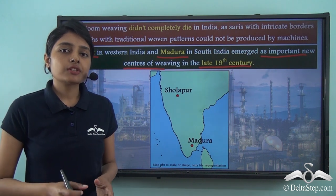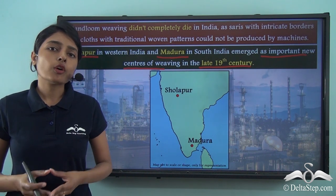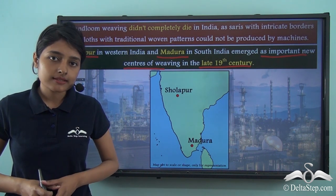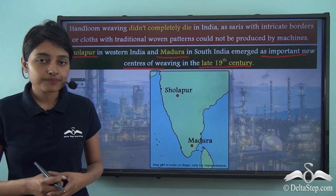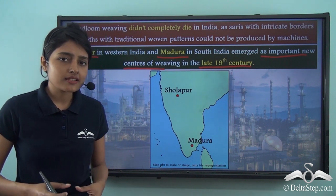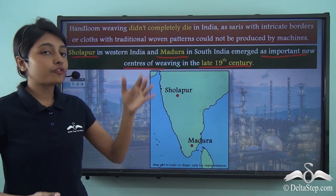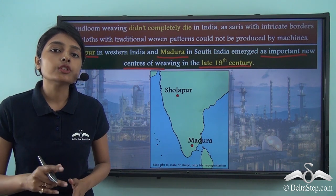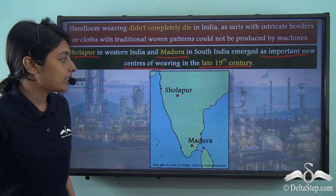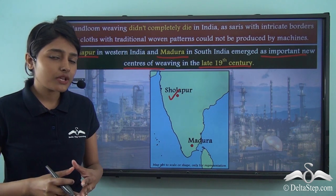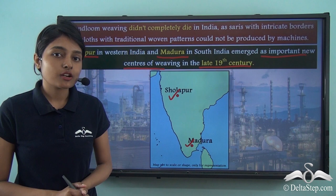By the late 19th century, Indian textiles were not in great demand in European or other international markets, and in fact Indian cotton textiles were not in great demand in the subcontinent itself. But it was the rich — whether Indians or Europeans — who wanted these traditional woven patterns. These traditional woven patterns could not be produced by machines, which is why new weaving centres came into being in Sholapur, present-day Maharashtra, and Madurai, present-day Tamil Nadu.